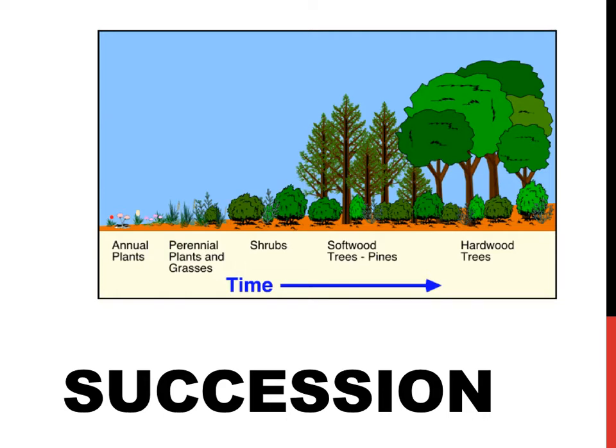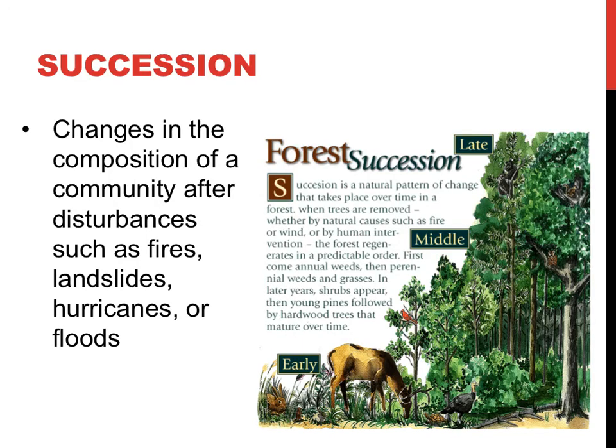The picture on this slide shows the progression of organisms in an ecosystem over a considerable amount of time — from annual plants, perhaps weeds on the left hand, to hardwood trees, potentially hundreds of years old, on the right. Ecosystems are constantly changing. Everything in ecology is constantly in flux. On a grand scale, entire ecosystems can be turned upside down when natural disturbances such as fires or floods occur.